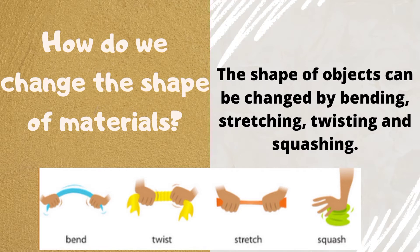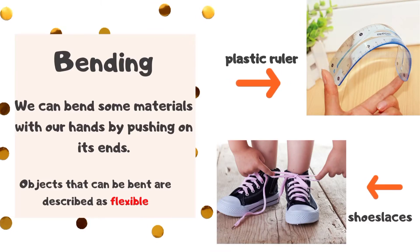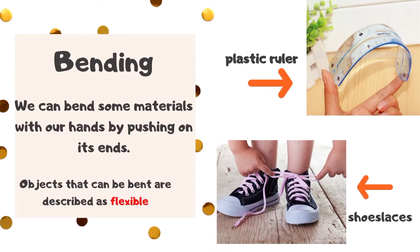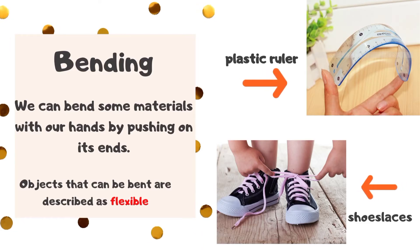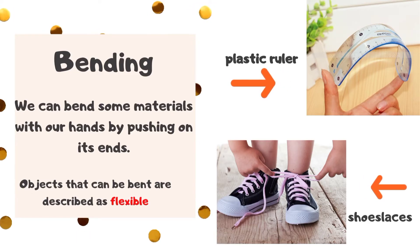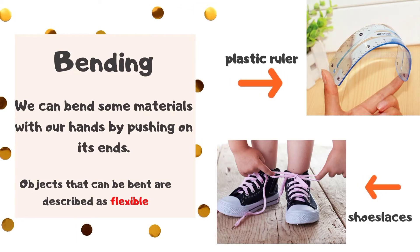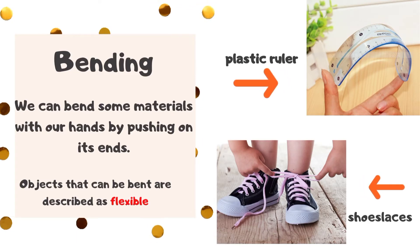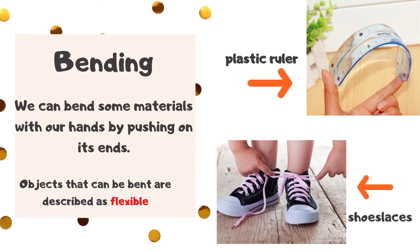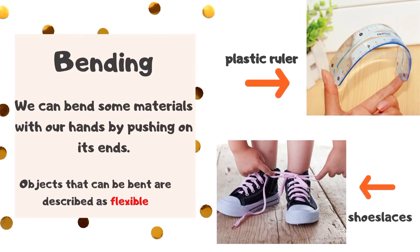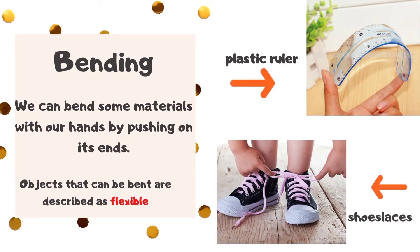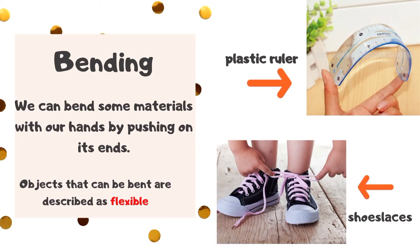So let's learn about bending. We can bend some materials with our hands by pushing on its ends. Objects that can bend are described as flexible. For example, a plastic ruler and also a shoelace.